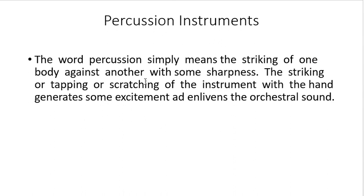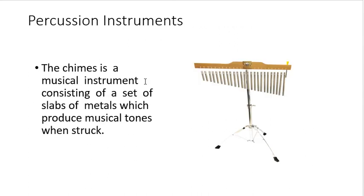Let's now proceed to the different percussion instruments. The word percussion simply means the striking of one body against another with some sharpness. The striking, tapping, or scratching of instruments with the hand generates excitement and enlivens the orchestral sound. A good example of a percussion instrument is the chimes — a musical instrument consisting of a set of slabs of metal which produce musical tones when struck. Chimes originated from China.